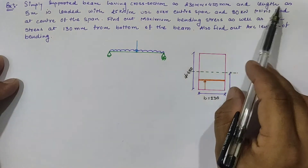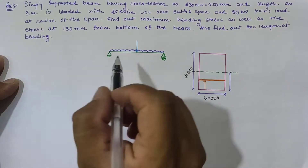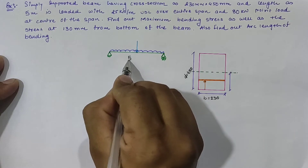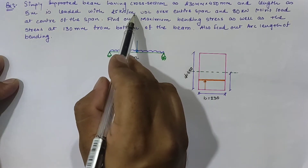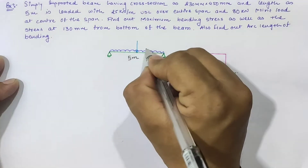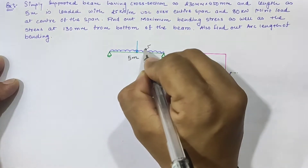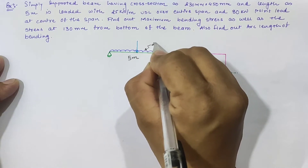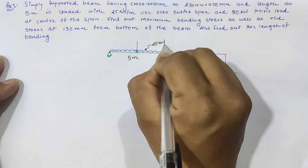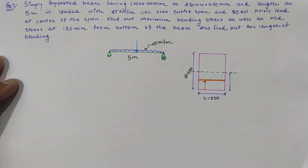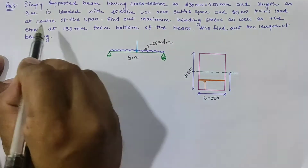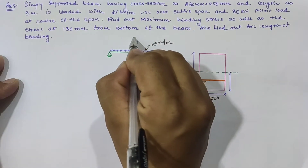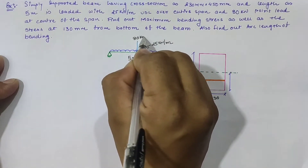The simply supported span has a length of 5 meters. It is loaded with 25 kN per meter UDL over the entire span, so our UDL value is 25 kN/m. Additionally, there is an 80 kN point load at the center of the span.